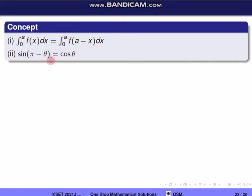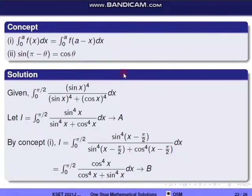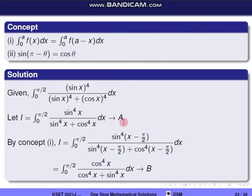Using the identities sin(π/2 − x) = cos x and cos(π/2 − x) = sin x, applying the property gives a second integral I = integral from 0 to π/2 of cos⁴x / (cos⁴x + sin⁴x) dx.